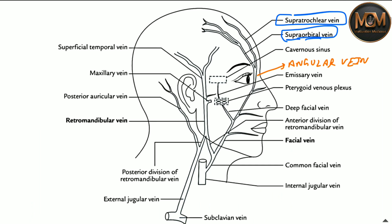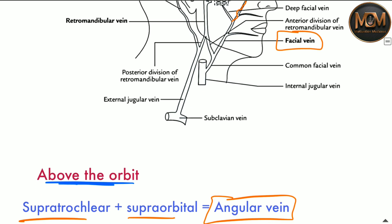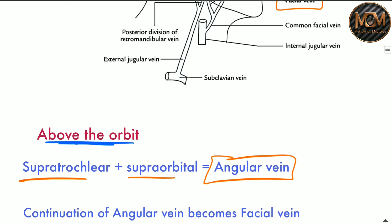This angular vein will continue downward and become the facial vein. So the continuation of the angular vein becomes the facial vein.